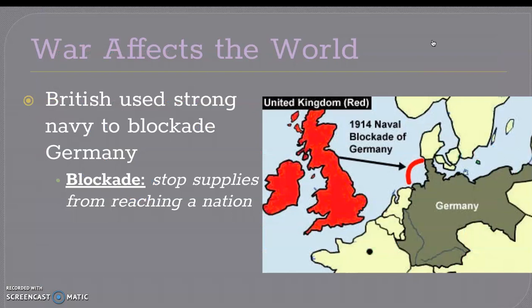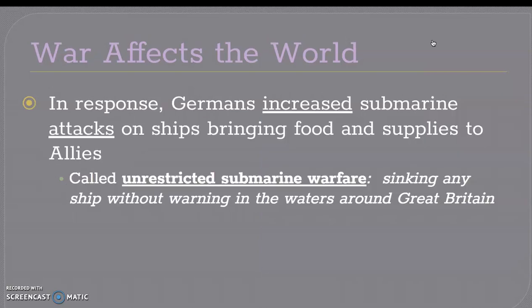Back in Europe, the British used a strong navy blockade against Germany. A blockade is basically blocking with their navy — with their ships — literally blocking the waters so that other ships with supplies are not going into Germany. They want to cut off supplies because if Germany doesn't get supplies, their troops cannot keep fighting. In response to this blockade, the Germans increased submarine attacks on ships bringing food and supplies to the Allies. This became known as unrestricted submarine warfare — basically sinking any ship without warning in the waters around Great Britain.